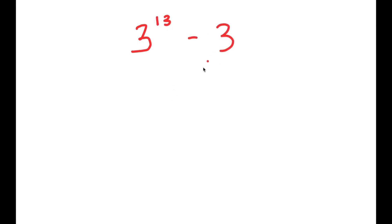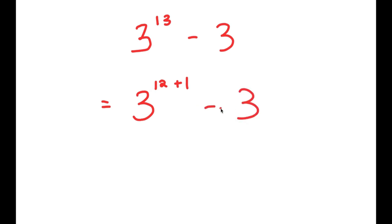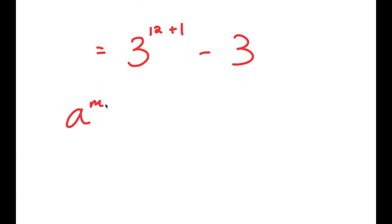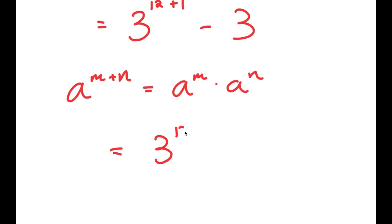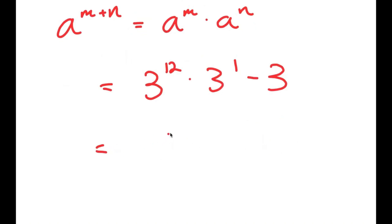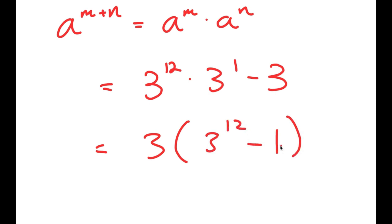In this video, I'm going to solve the problem 3 to the power of 13 minus 3. To solve this, I'm going to first start by rewriting this as 3 to the power of 12 plus 1 minus 3. If I have something in the form a to the power of m plus n, this is equal to a to the power of m times a to the power of n. So I get 3 to the power of 12 times 3 to the power of 1 minus 3. From here I can factor out 3, so I get 3 times 3 to the power of 12 minus 1.